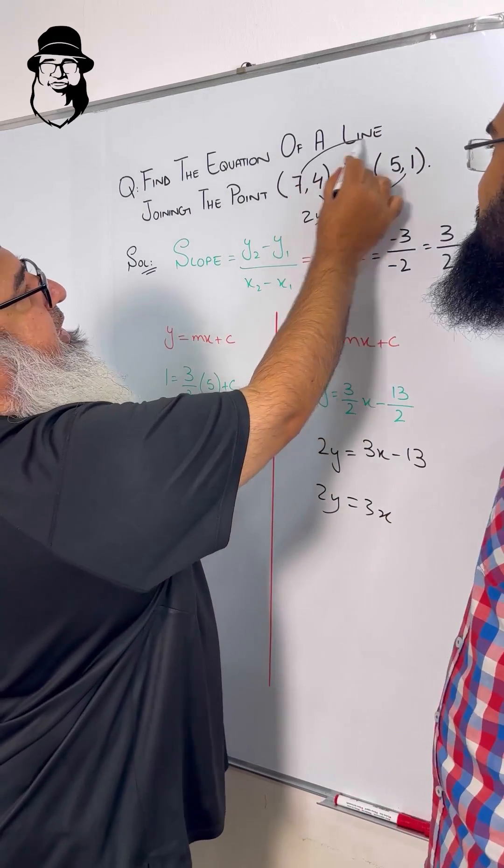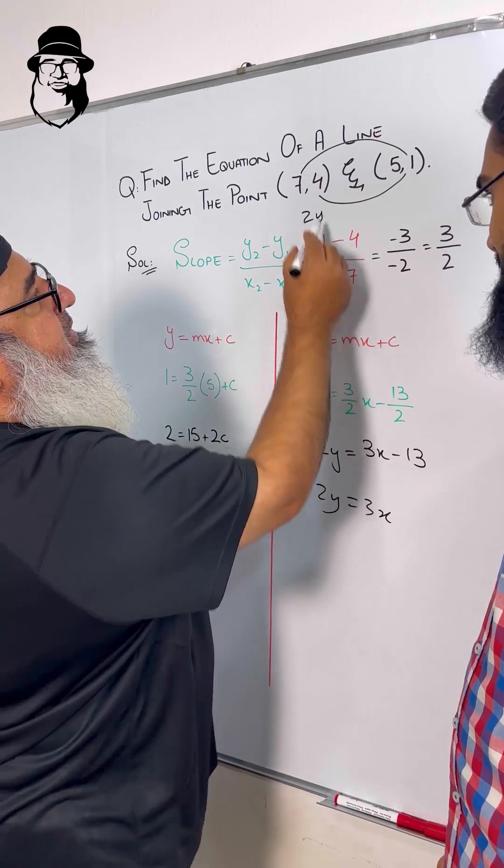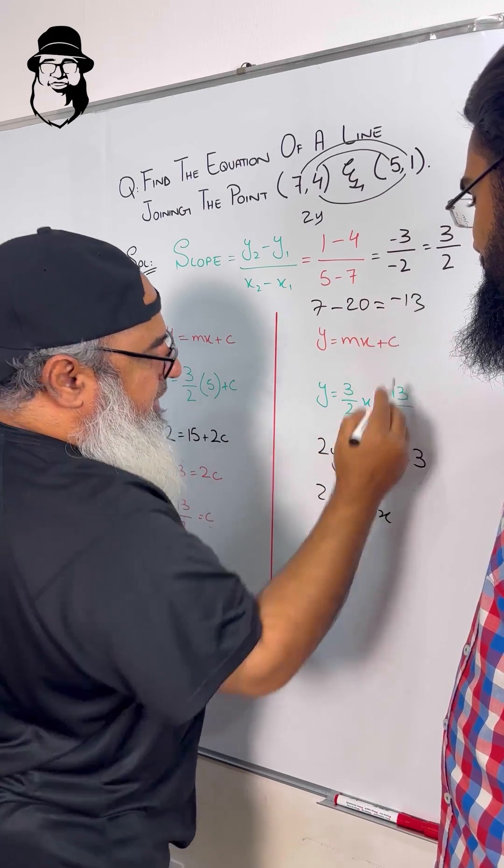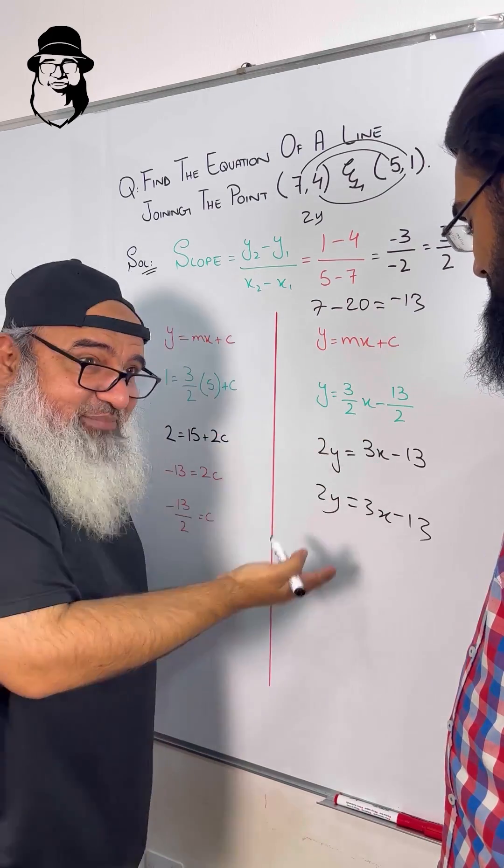Then 7 times 1 is 7, minus 4 times 5 is 20. 7 minus 20 is minus 13, we write it here. It's the same equation.